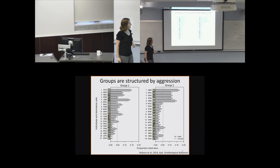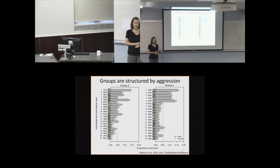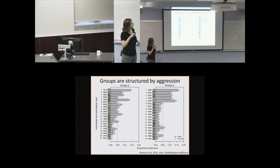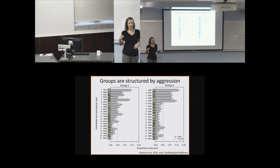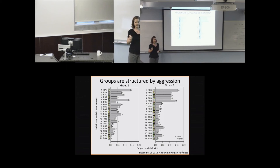In my dissertation research I found that the parakeet groups could be structured into these moderately linear dominance hierarchies—shown here for Group 1 and Group 2. The individual IDs and dominance rank are on the Y axis, with the most dominant at the top and the most subordinate at the bottom. On the X axis is the proportion of total wins that each individual won within their social group. Although the most dominant individuals were responsible for the most wins, there wasn't a direct relationship between an individual's ability to win and their rank—because dominance rank depends not just on ability to win, but also on which individuals it's able to win against.